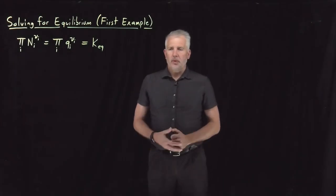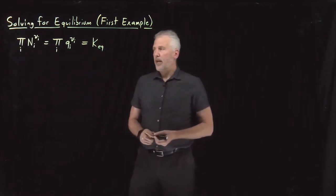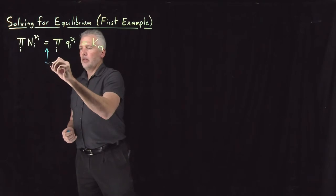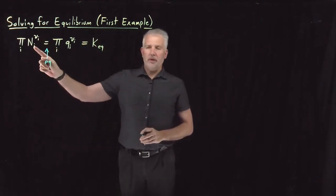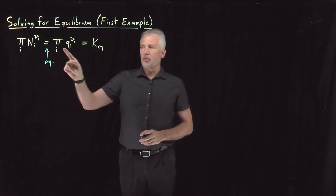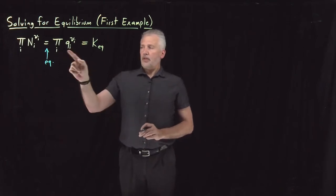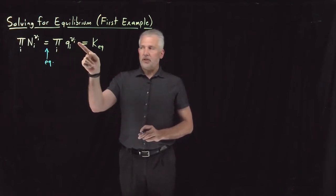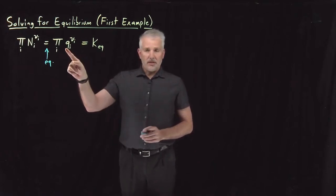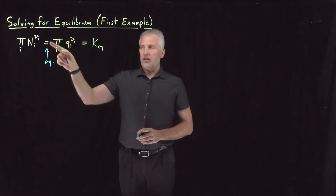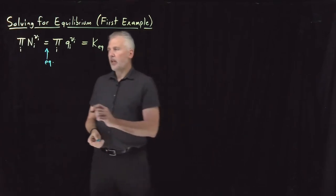We've progressed to the point where we understand equilibrium as being summed up by this expression: if a chemical reaction is at equilibrium, this must be true. Some product of the amounts of each reactant and product raised to some powers must equal the product of partition functions raised to some powers. Those partition functions at a particular temperature, raised to stoichiometric coefficients, are constants — and that whole collection is what we call the equilibrium constant.